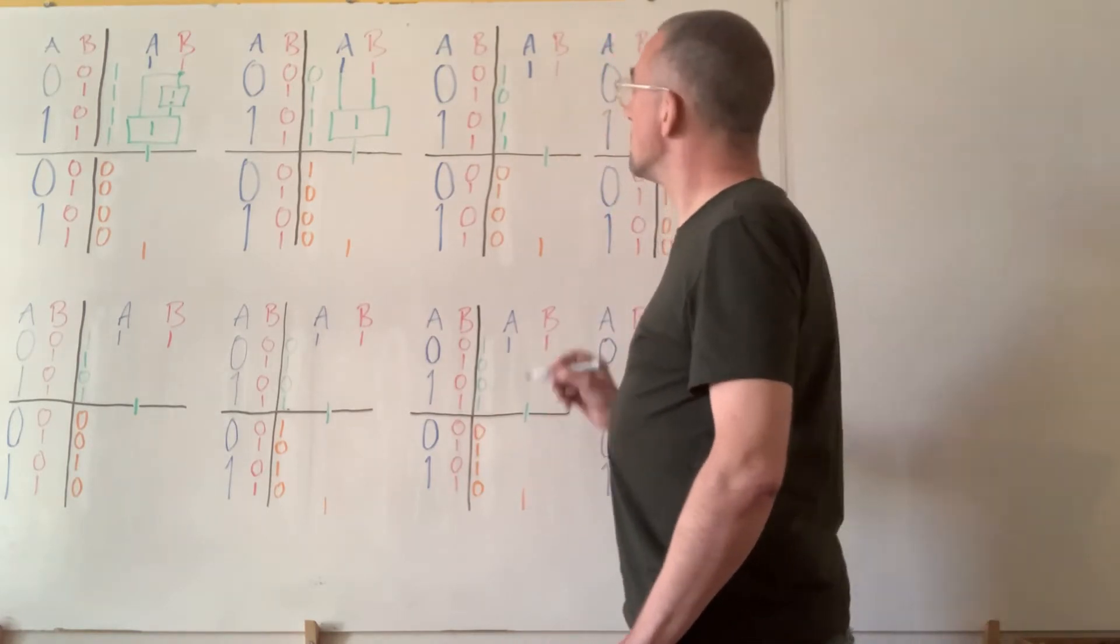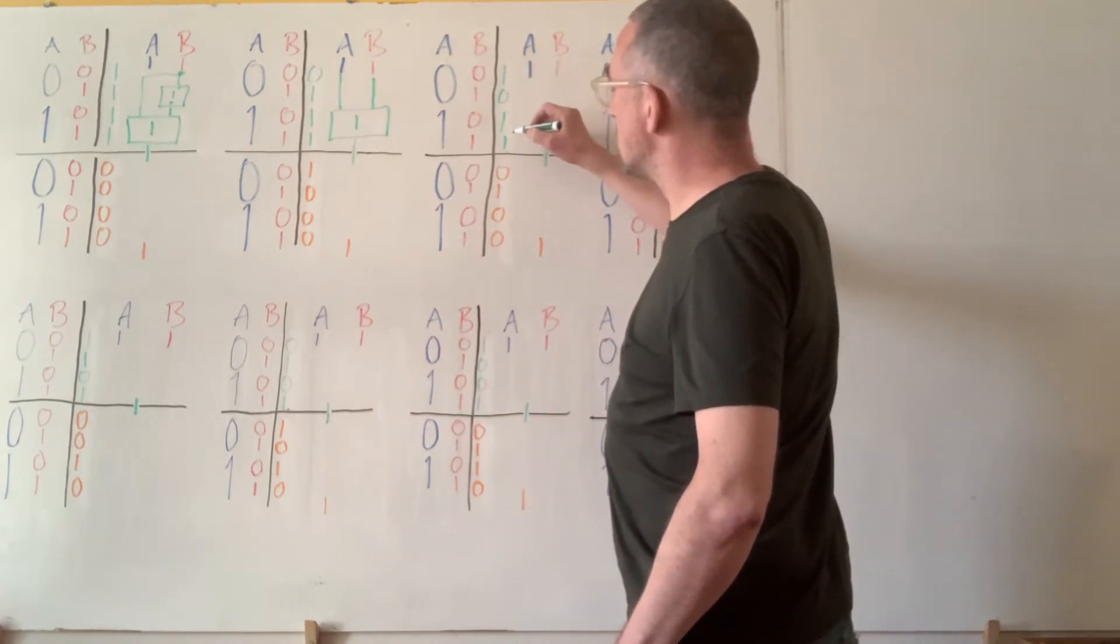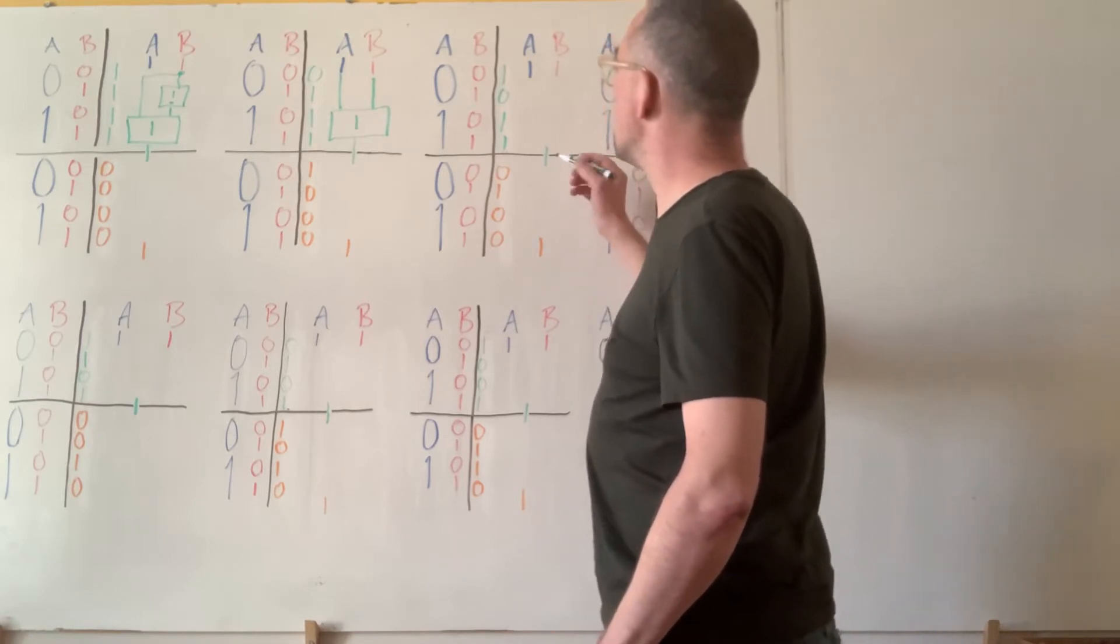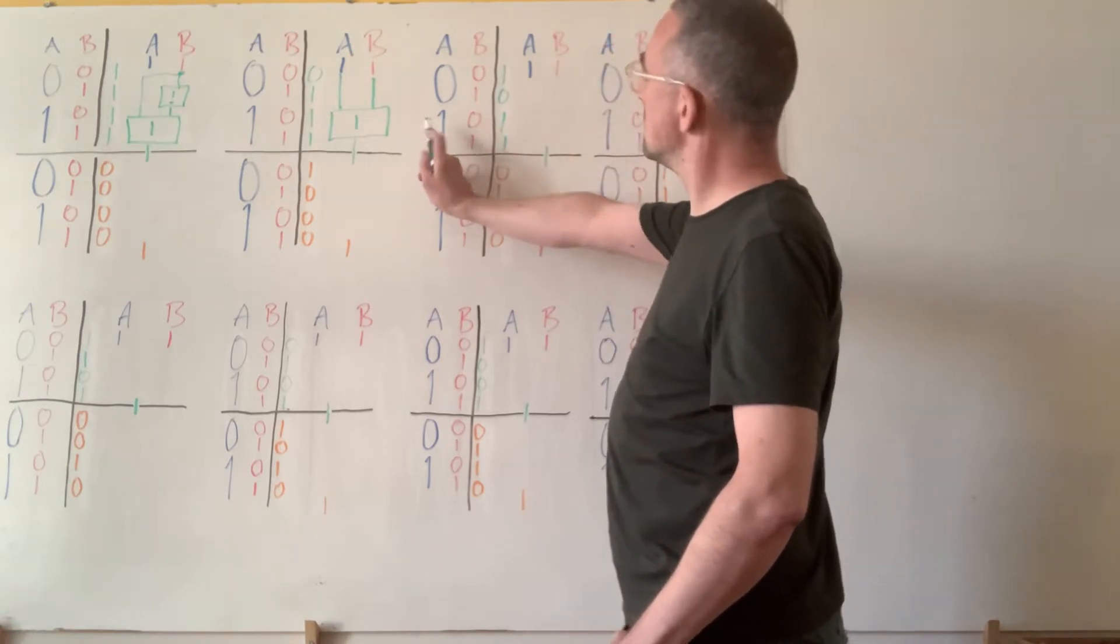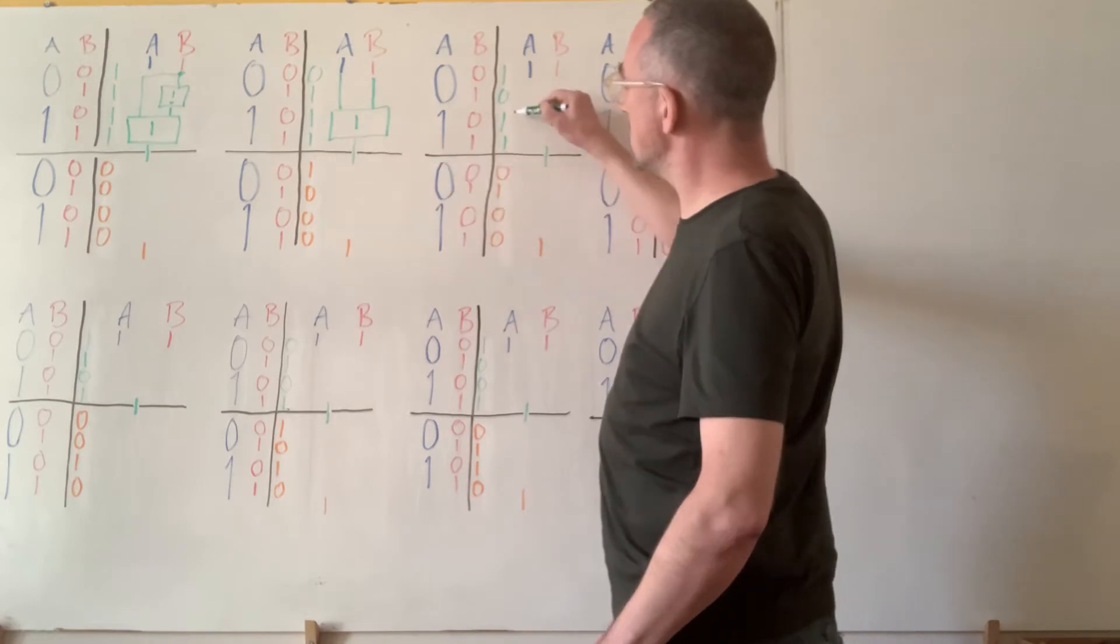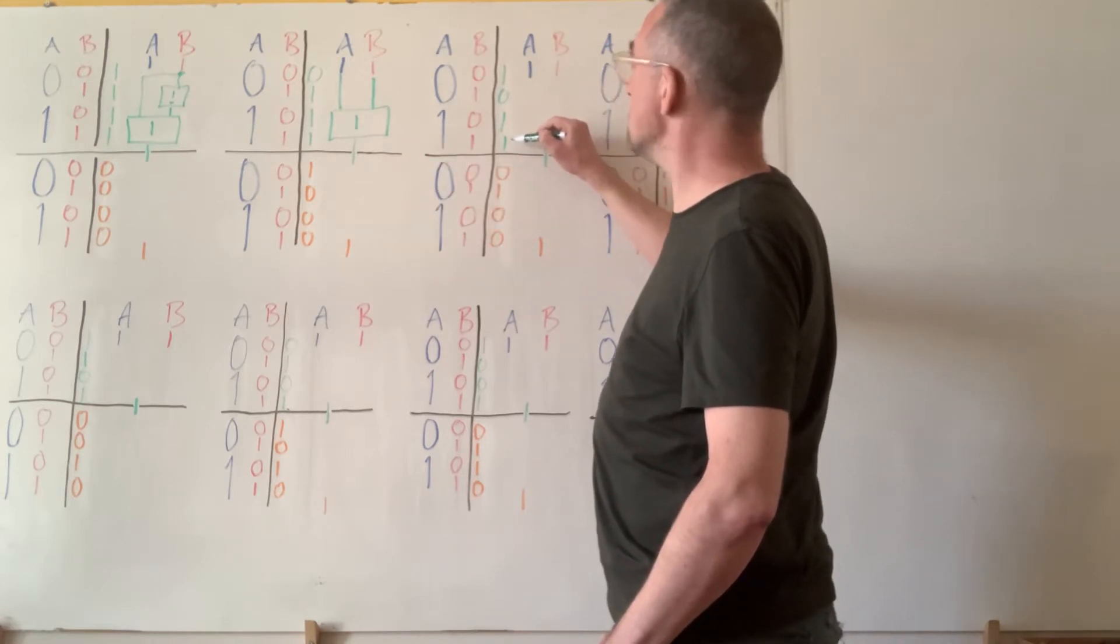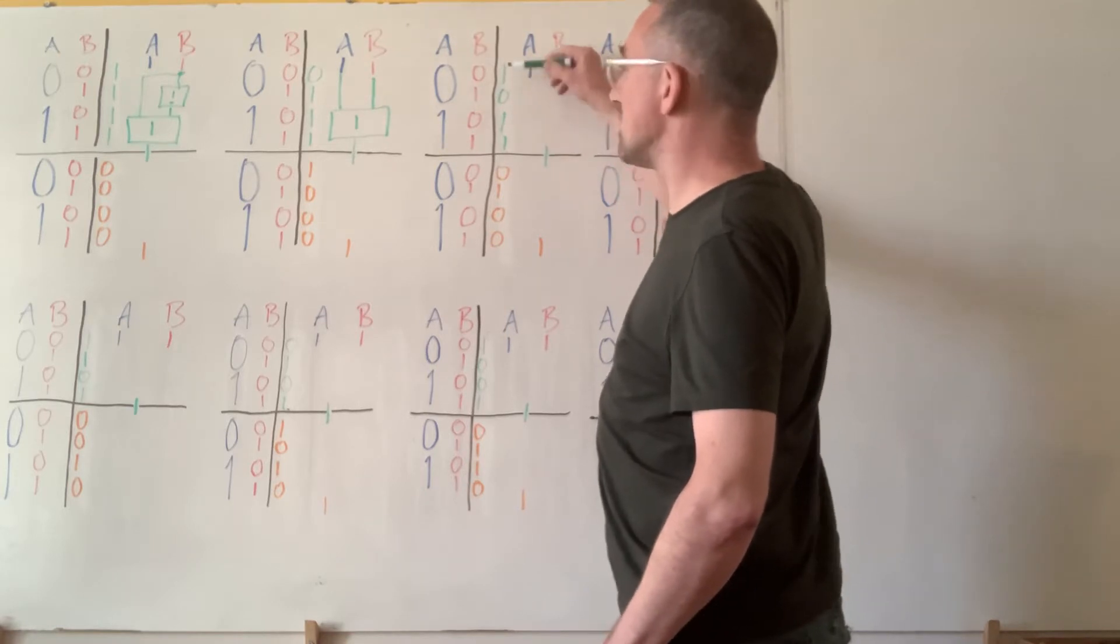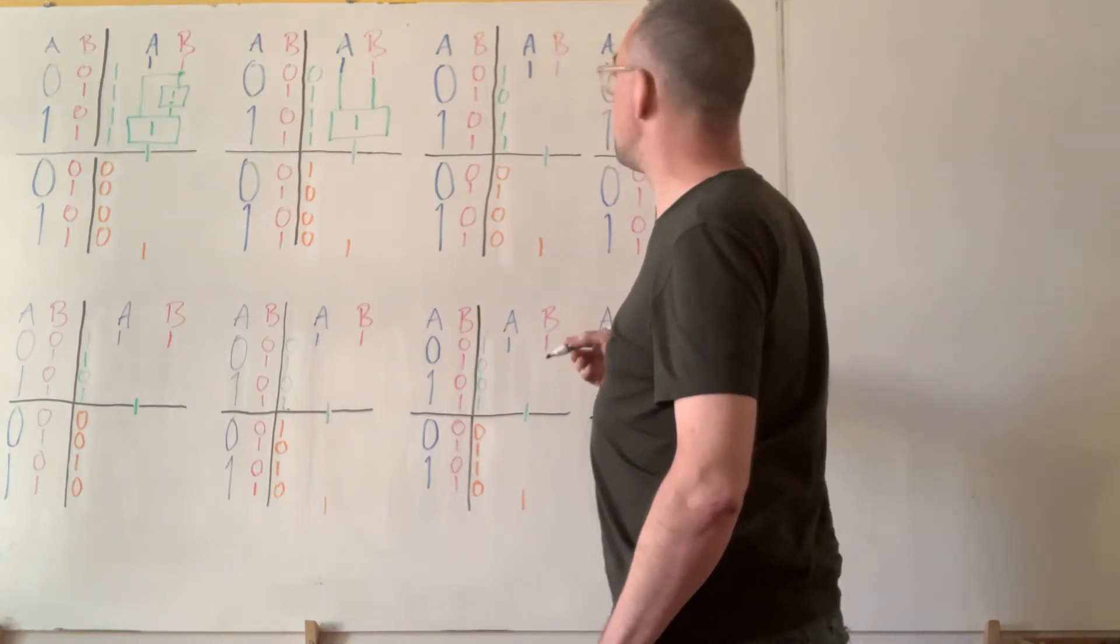Alright. Now, 1011 from top to bottom. What have we got here? Well, we can see that if A is true, the output's definitely true. And if B is false, the output's definitely true.